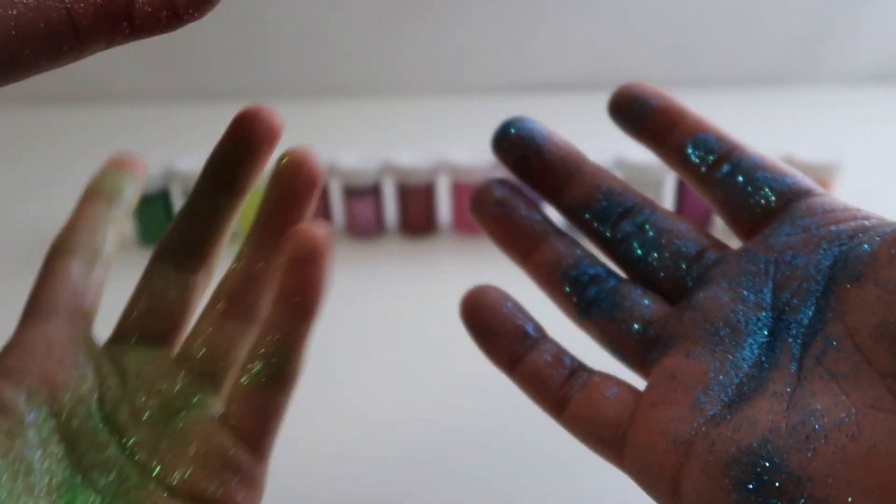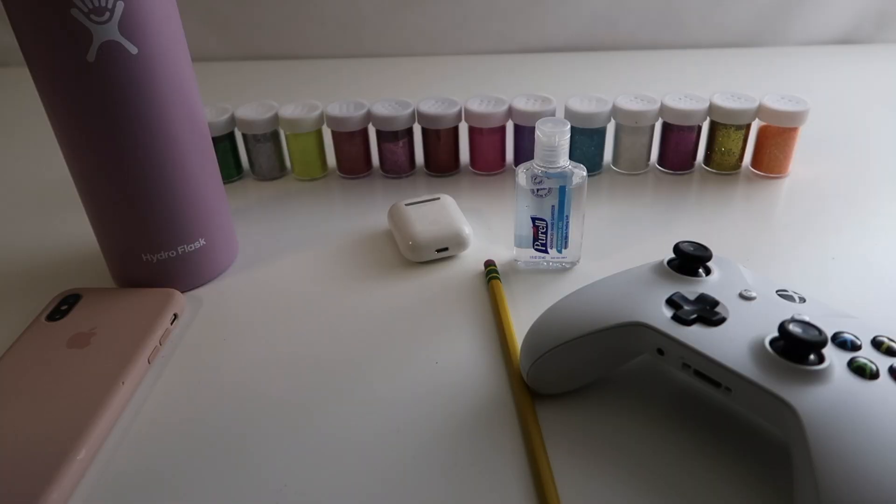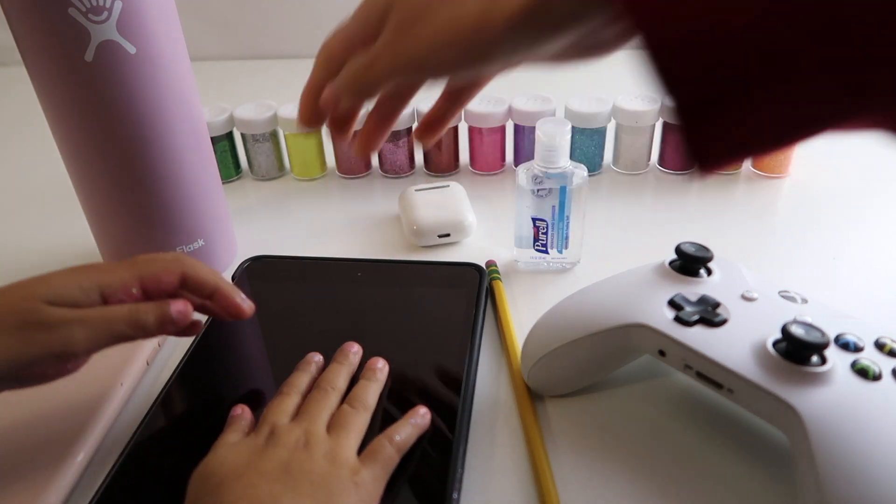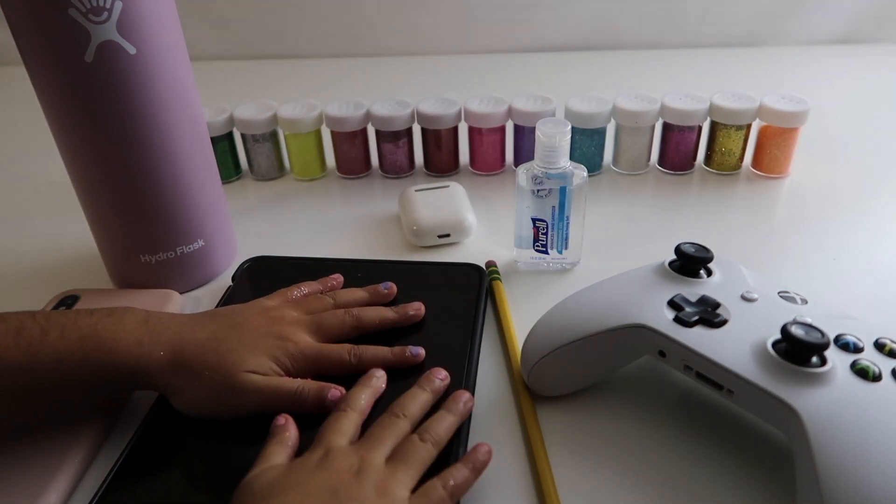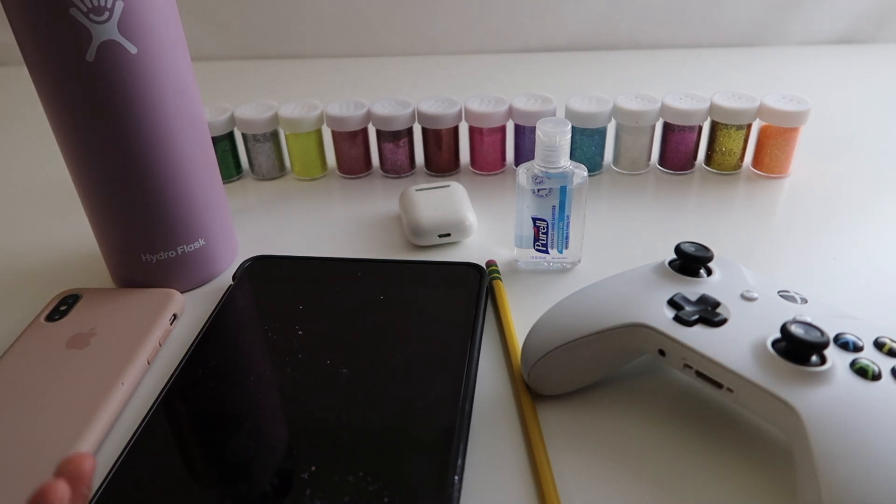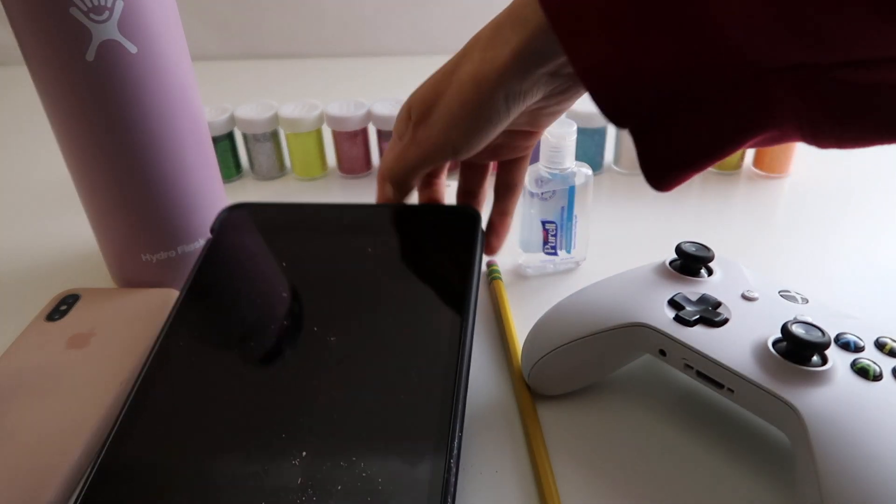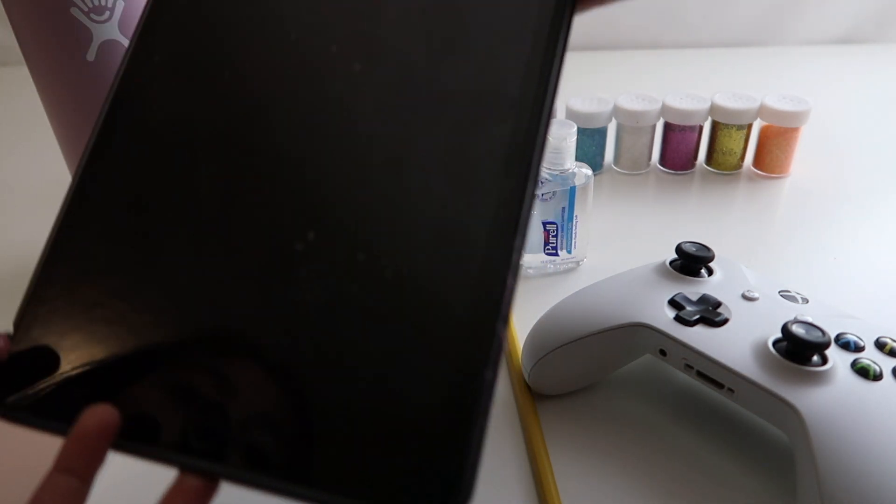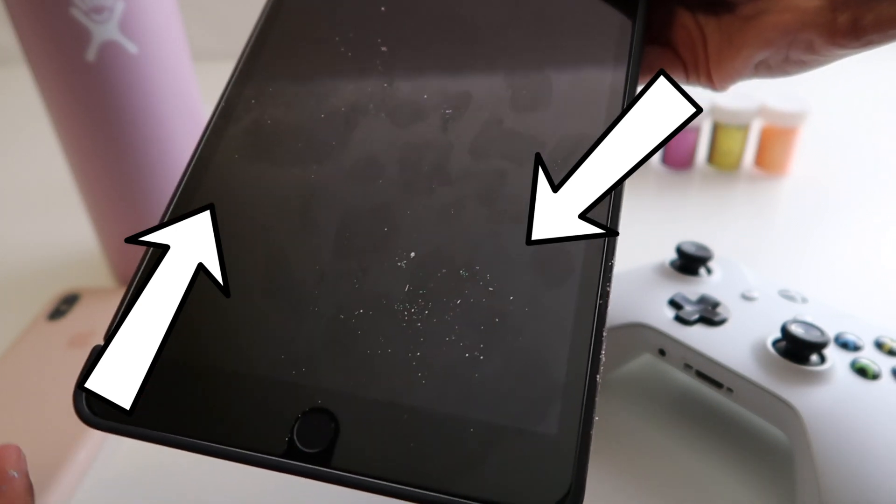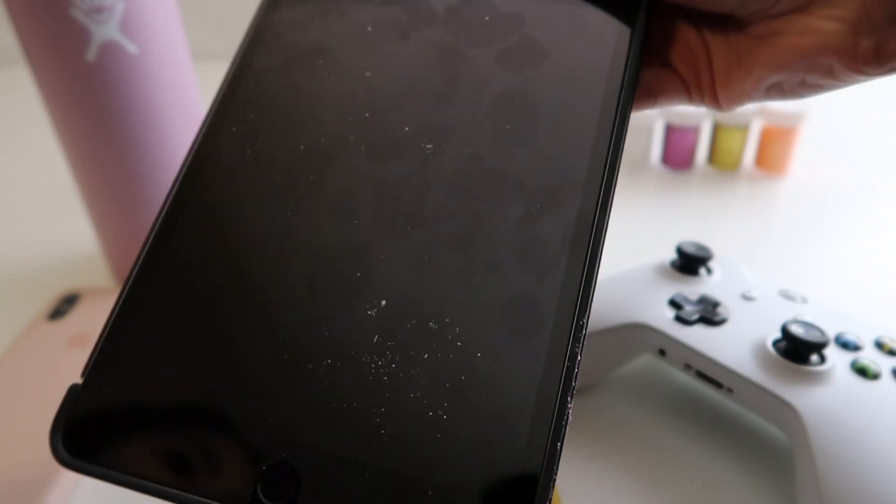Now let's see what happens when we touch things. Look how dirty it came out, you guys. Those are the germs that we can't see. We can only see them with microscopes.